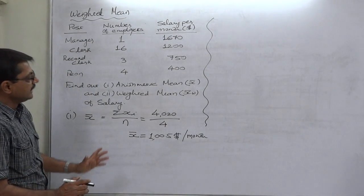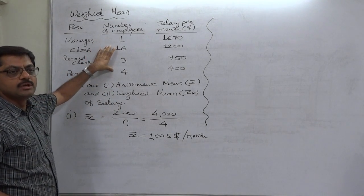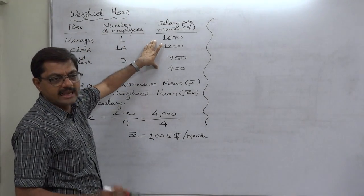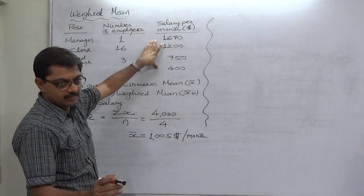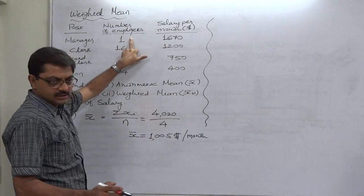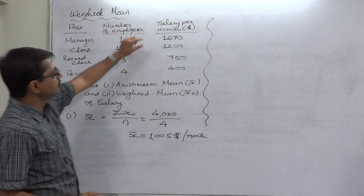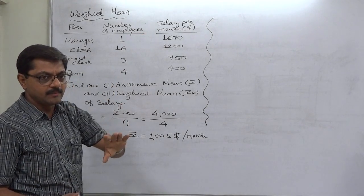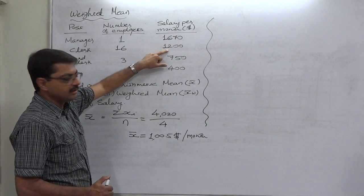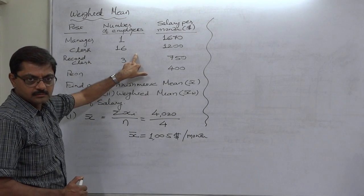In case of calculation of weighted average, we should consider the relative importance of each and every value. 1670 is paid but to only one person, so the salary of manager or the category of manager remains 1670 per month. But salary of 1200 is paid per person to 16 persons on the post of clerk.